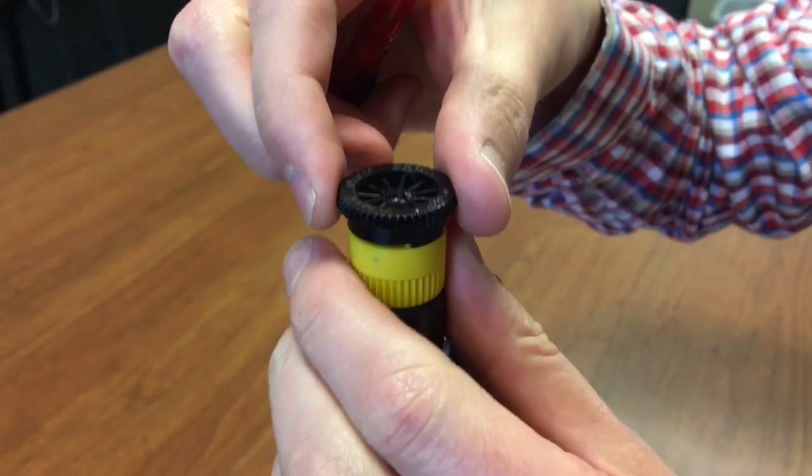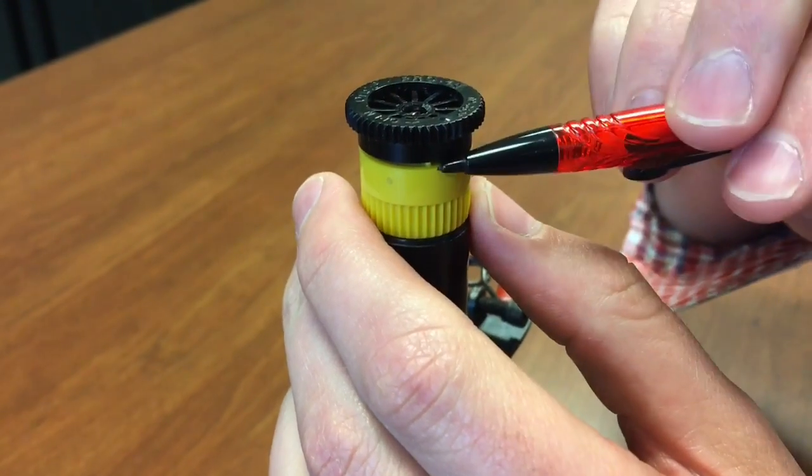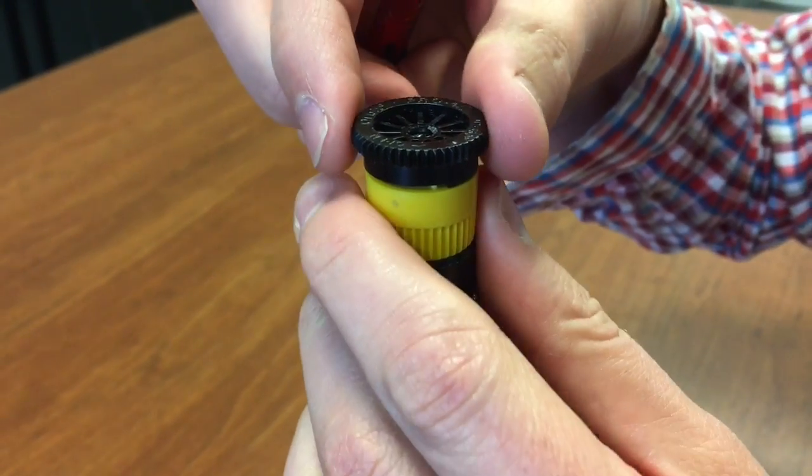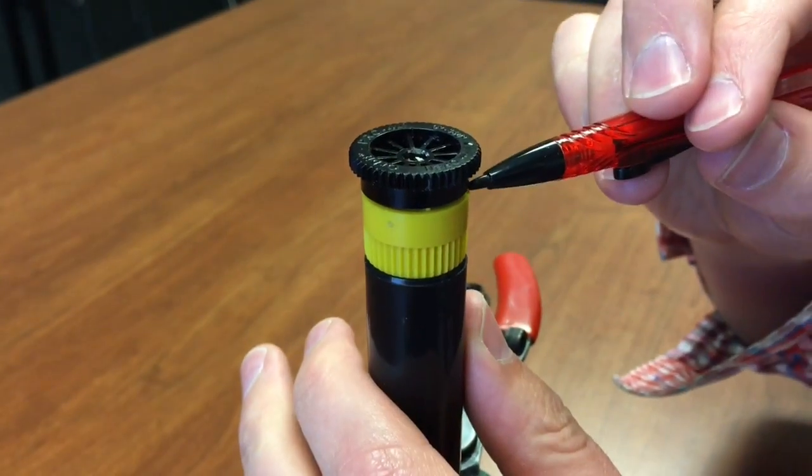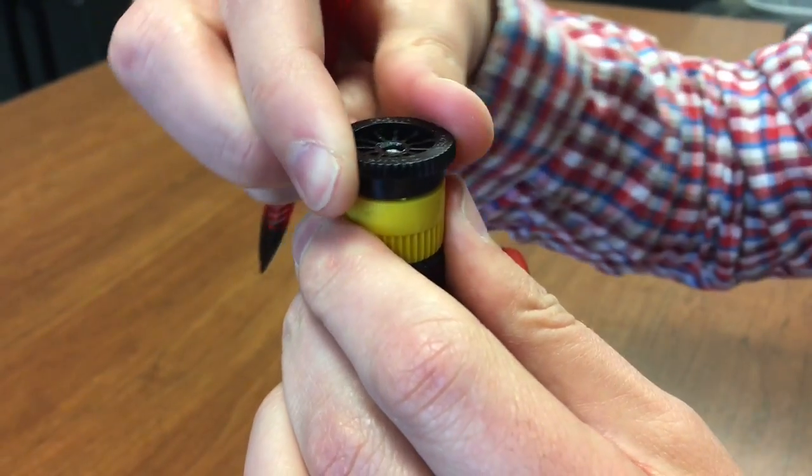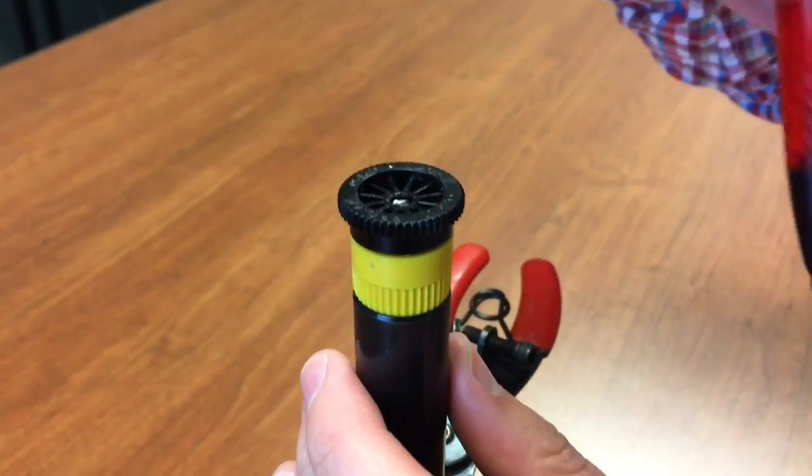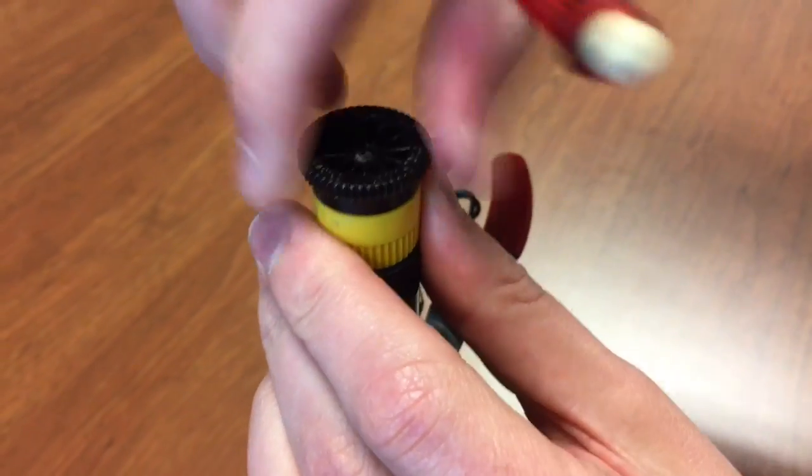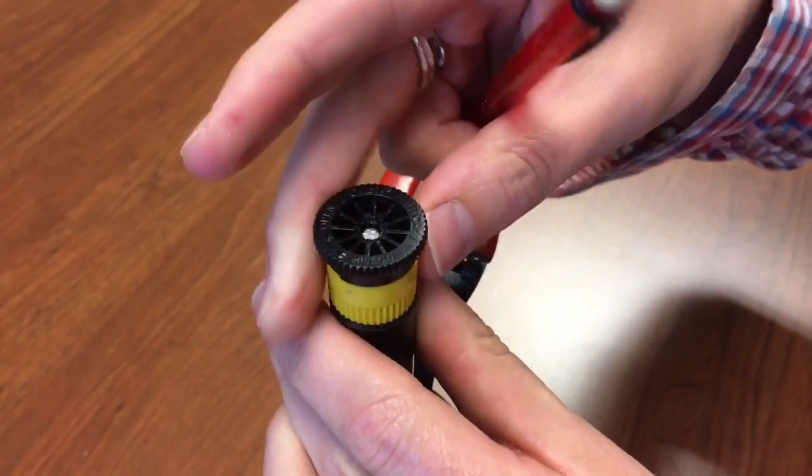Now when you turn it counter-clockwise, that is opening the pattern up. So this is the leading edge here on the top part on the black. As I open it, at about this point we've now got a quarter pattern. So everything between here and here will spray water. If I turn it again, I can get a half pattern so that's 180 degrees spraying in this direction. All the way will give me a 360 degree spray pattern.